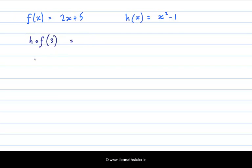So f of 3 is 2 times 3 plus 5, which is 6 plus 5, it's 11. And then we get h of 11. So it's the output of the first function, h of 11 is the input of the second function. h of 11 is 11 squared minus 1, which is 121 minus 1, which is 120. So h after f of 3 is 120.